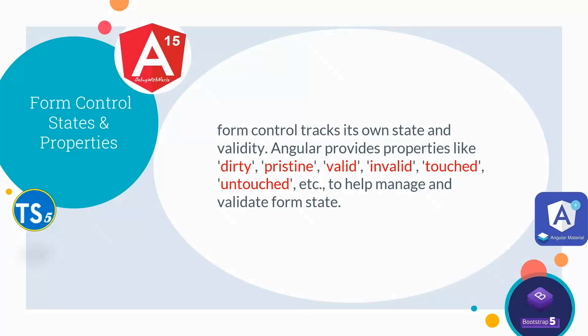We have form control states and properties. A form control tracks its own state and validity. Angular provides properties like dirty, pristine, valid, invalid, touched, and untouched to help manage and validate form state.